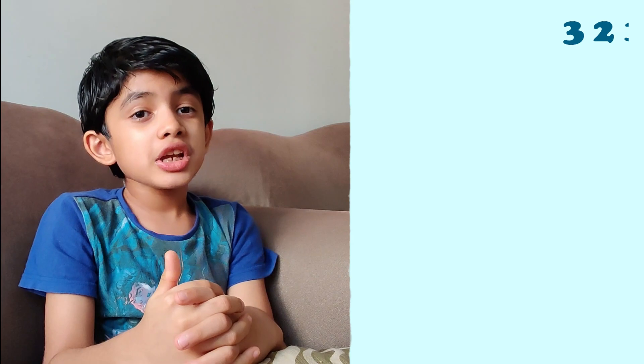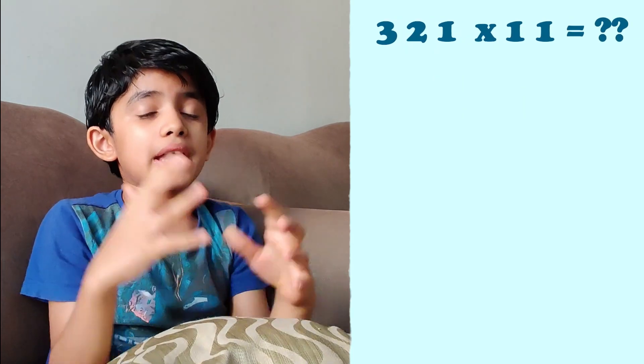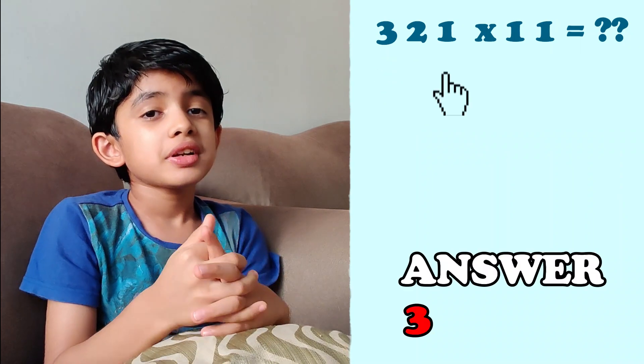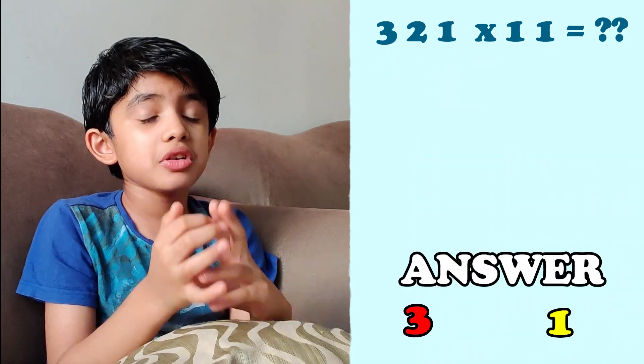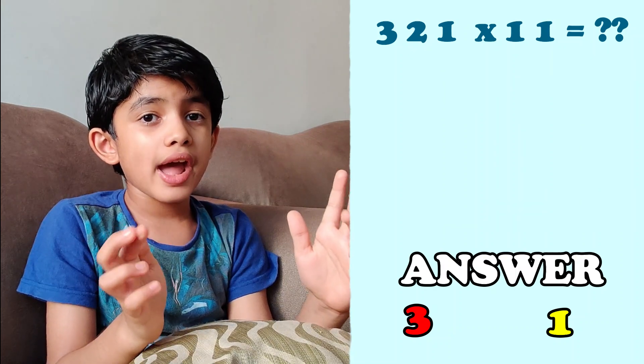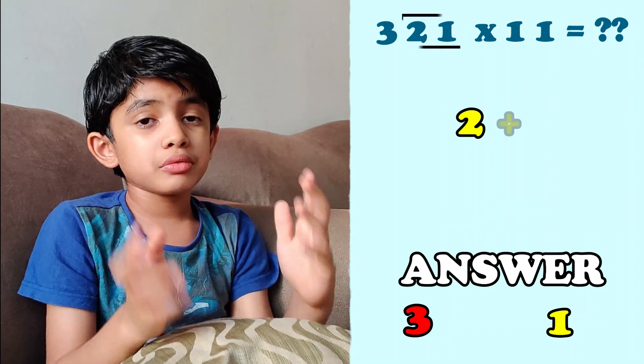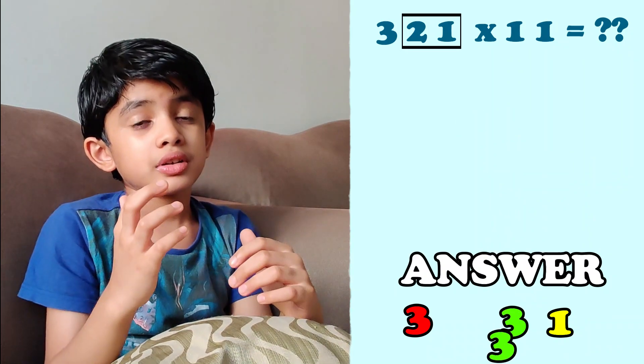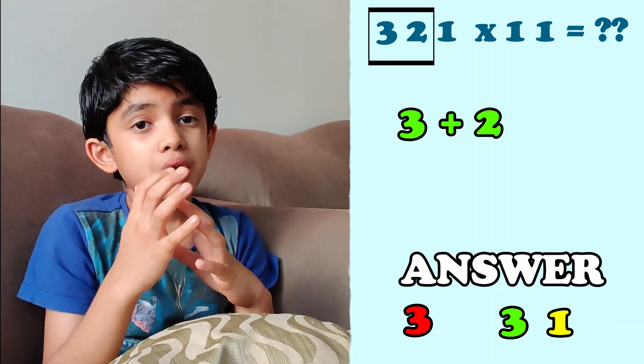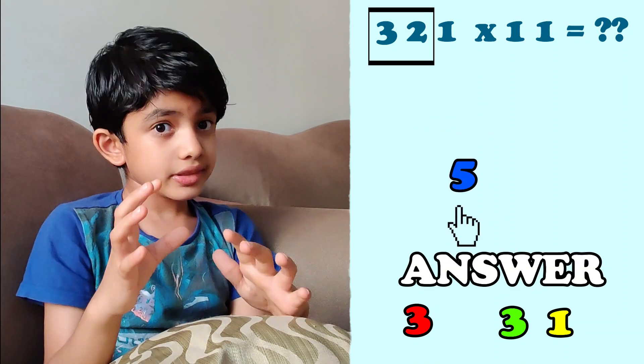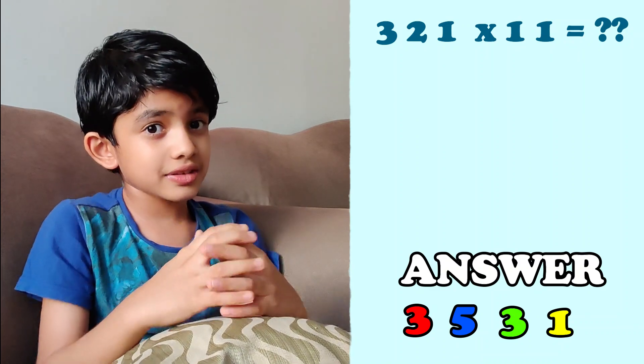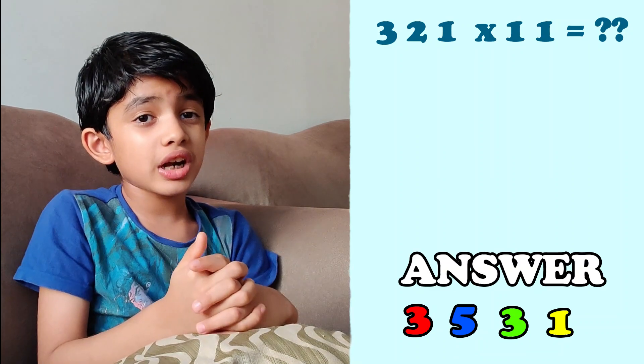Now let's take 321. Write 3 as the first digit and 1 as the last digit. Add the middle digits: 2 and 1 gives 3, and 3 and 2 gives 5. Write that 5 next to 3. There is your answer. The answer is 3531.